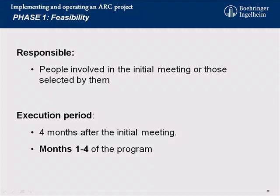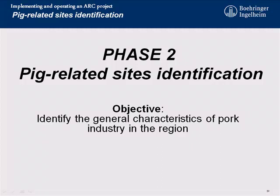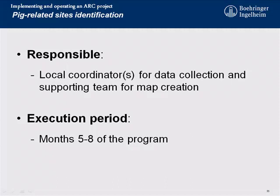Phase one takes about four months, depending on the proactivity of the group. Then we have the identification of sites — you really want to know what's there: where the farms are, what sort of farms, the type of production. That also takes about four months. So as you can see, it takes about eight months to get people organized. In this project we're talking about 124 different systems, so the mapping and gathering of all the information took quite a while.